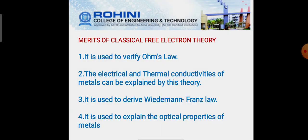Let us see about the merits of classical free electron theory. This theory is used to verify Ohm's law, that is V equals IR. The electrical and thermal conductivities of metals can be explained by this theory. It is also used to derive Wiedemann-Franz law and to explain the optical properties of the metals.